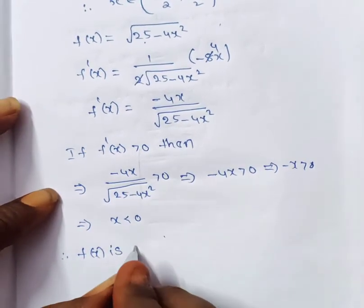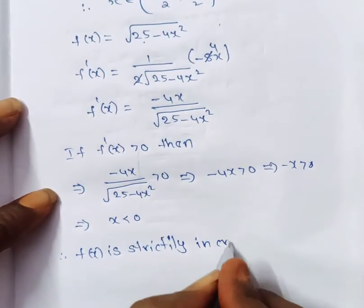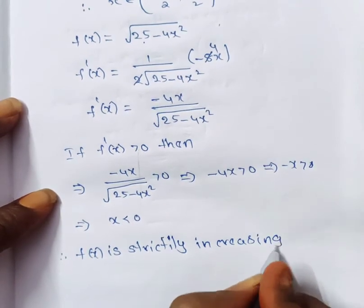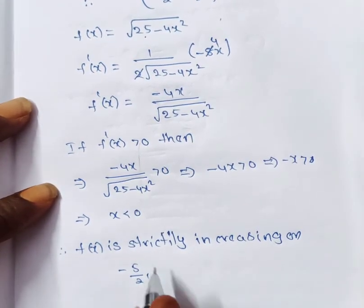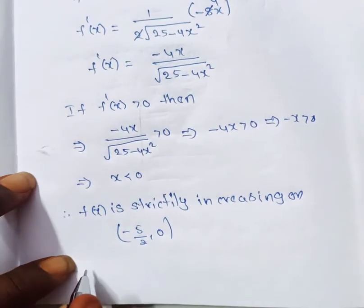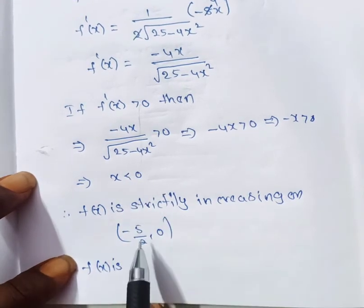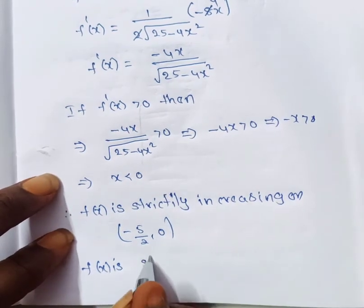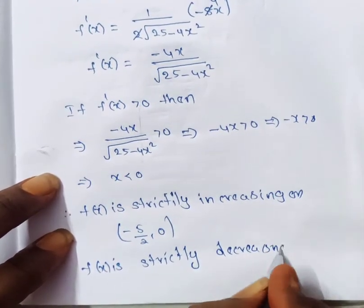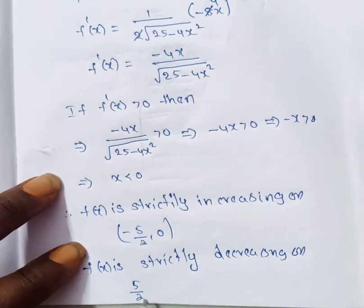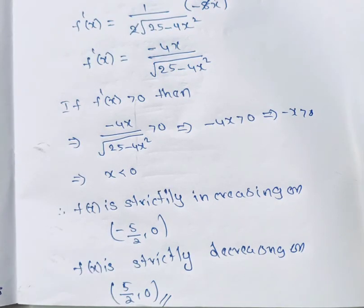f(x) is strictly increasing on (−5/2, 0) and strictly decreasing on (0, 5/2). Thank you.